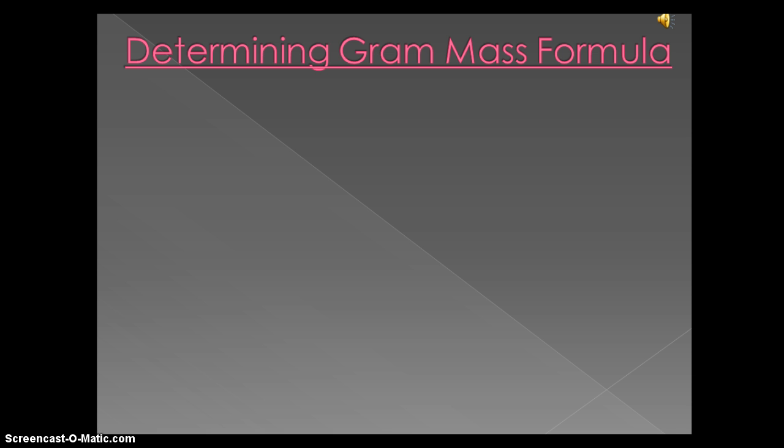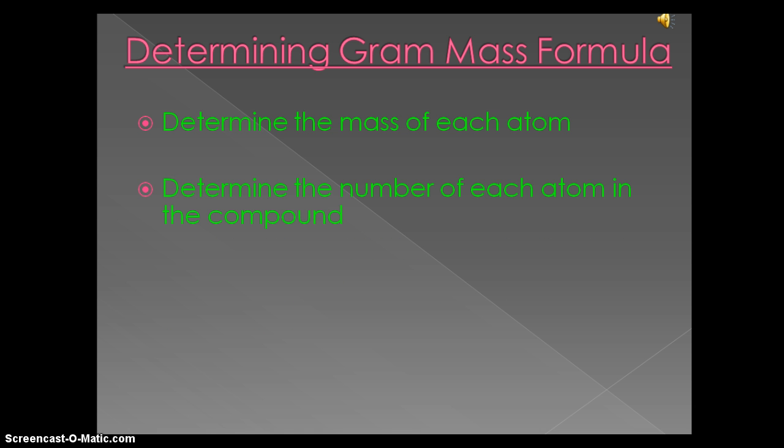Determining Gram mass formula. Here are the steps that you need to remember. First step, determine the mass of each atom. Next, determine the number of each atom in the compound. Next step, multiply the mass of the atom by the number of atoms in the compound. Last step, just add the mass of each atom together.